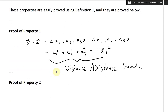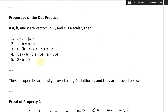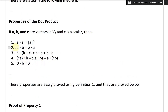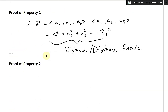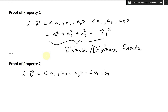Now let's look at the proof of Property 2: A dot B equals B dot A. This is a straightforward one. We write vector A dot vector B in component form: A1, A2, A3 dot B1, B2, B3. Applying the definition, this equals A1 times B1 plus A2 times B2 plus A3 times B3.